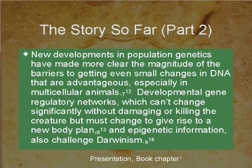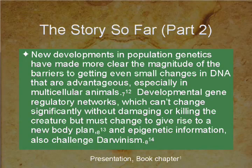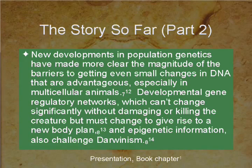New developments in population genetics have made clearer the magnitude of barriers to getting even small advantageous changes in DNA, especially in multicellular animals. Developmental gene regulatory networks, which are interlocking, can't change significantly without damaging or killing the creature — but they must change if we're going to give rise to a new body plan. Epigenetic information also challenges Darwinism.